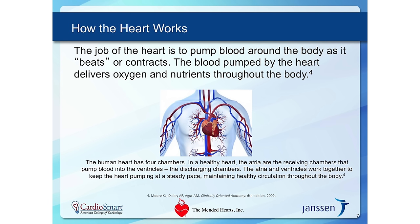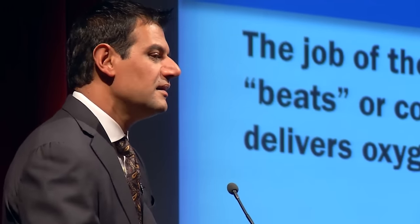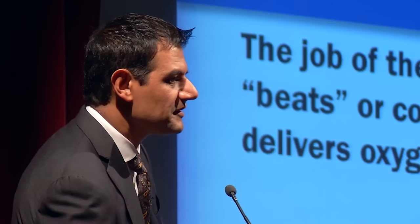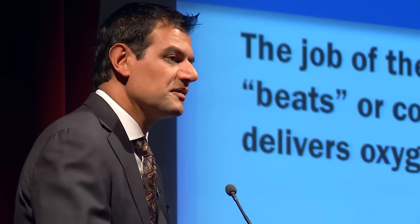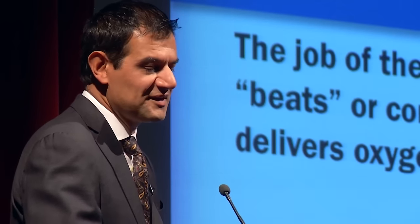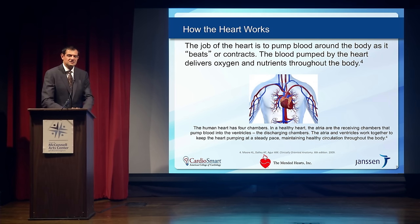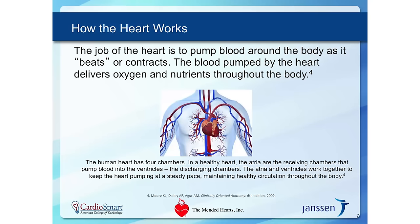Let's review how the heart works and what leads to irregular heart rhythms. The most basic concept is that the heart is a muscular pump, made of muscle like the muscles in our arms and legs. The goal of the heart is to pump blood to all of our vital organs — our brain, kidneys, lungs — and also to itself, since being a working muscle, it needs its own blood supply.